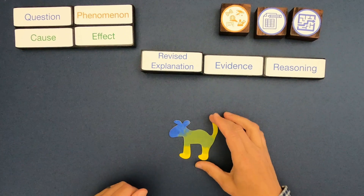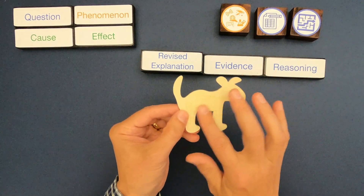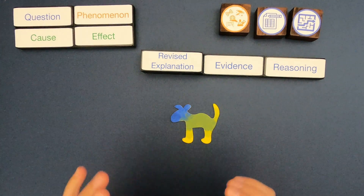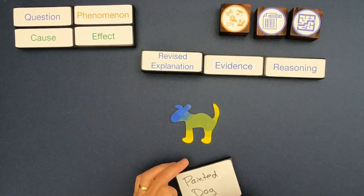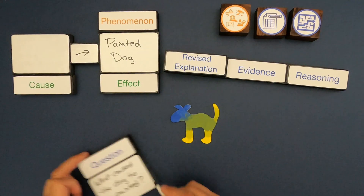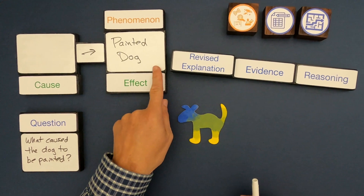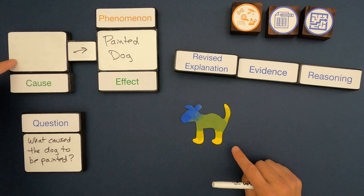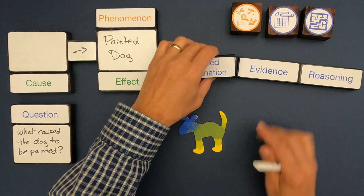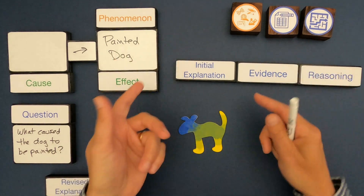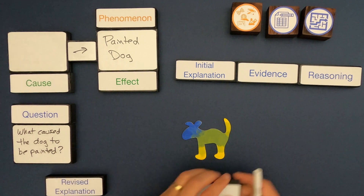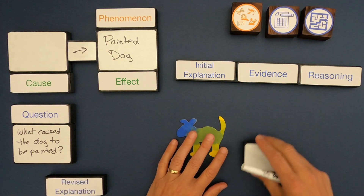So what we're given to start is just this dog. It's made of wood — the back is not painted and it's rough, and then it's got painting on the front. I'm going to write down what the phenomena is. The phenomena is the effect: we have this painted dog and we don't know what caused that. That's our guiding question: what caused the dog to be painted? I'll start with an initial explanation based on the evidence. Remember: evidence first, then explanation, and then reasoning.